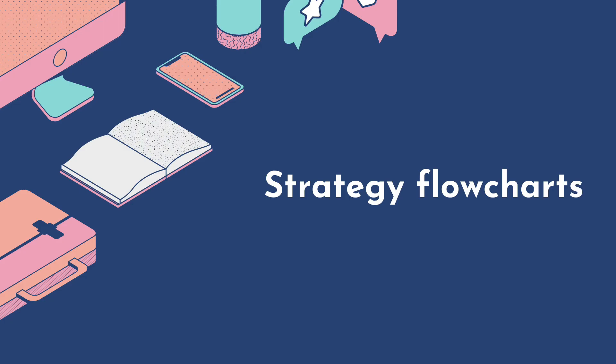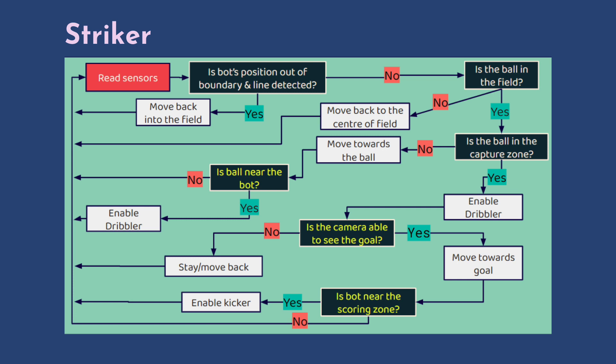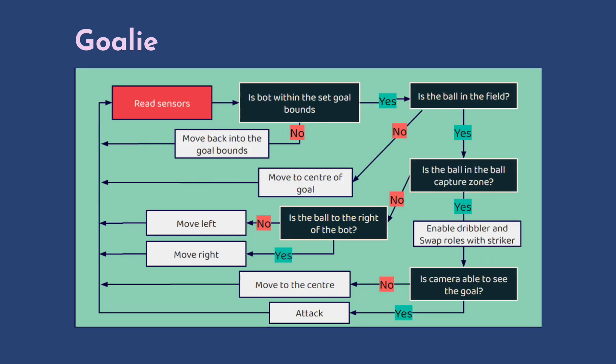Lastly, we will be talking about our strategies, some of which we have implemented and some of which we hope to implement in the future. Here is the flowchart for our striker bot. It first checks if it is within the boundary before searching for the position of the ball. Once it has the ball, it checks if it is able to see the goal and will score if it is close enough to the goal. And this is the flowchart for the goalie. It checks if it is within the goal bounds and also checks for the presence of the ball in the field. If the ball is not in the field, it will return to the centre of the goal, while if it is in the field, the goalie would defend the goal based on the relative position of the ball. If the goalie manages to intercept the ball, it will switch roles with the striker.